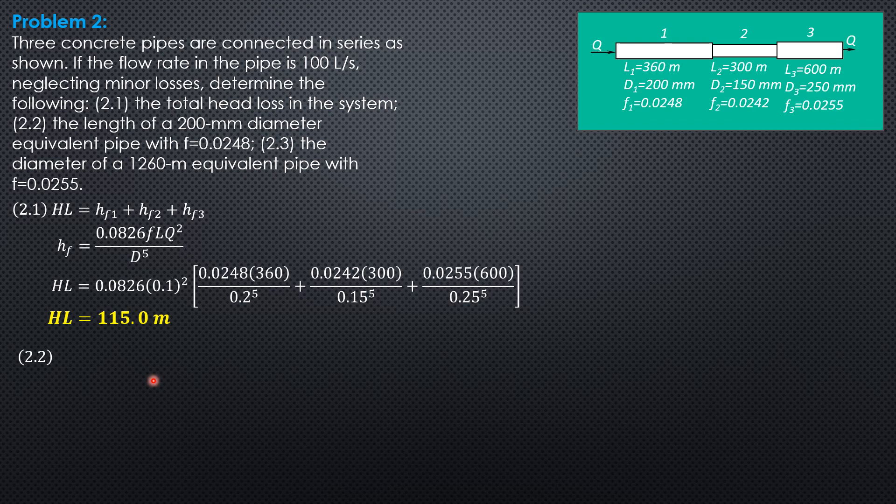So HF is 115 for that single equivalent pipe. So substitute 0.0826, friction factor 0.0248, length equivalent discharge 0.1 square divided by diameter 0.2 to the fifth equals 115.